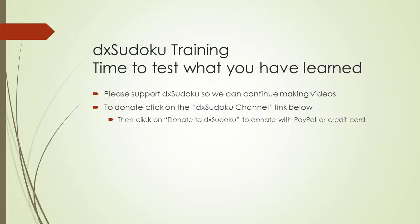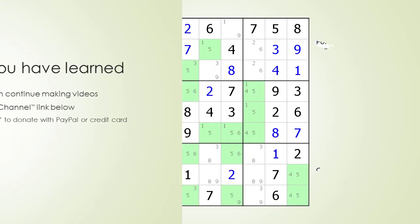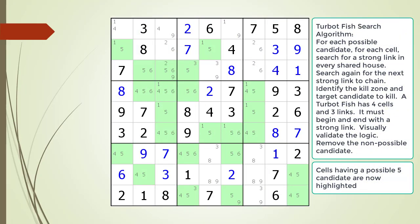Time to test what you have learned. Before we begin, please take some time to support DX Sudoku — thank you for your support. Consider the Sudoku in progress. All the cells having a possible 5 candidate are now highlighted. Pause the video and find the TurboFish within the puzzle: identify the 4 cells, the 3 links, the kill zone, and the target candidate to kill.